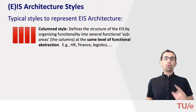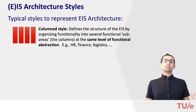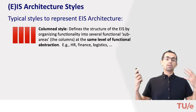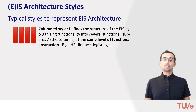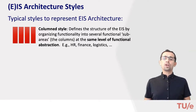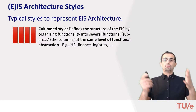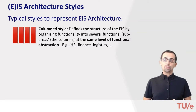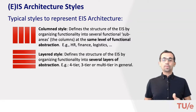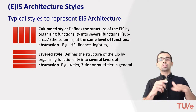In the column style, you will see the structure of the enterprise system organized into several functions or sub-areas — which are columns — all at the same level of abstraction. For instance, one column is the HR module, another is the finance module, or logistics, or production. So it is essentially a functional decomposition.